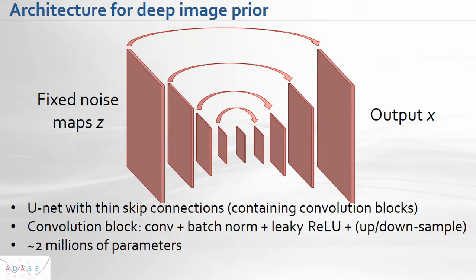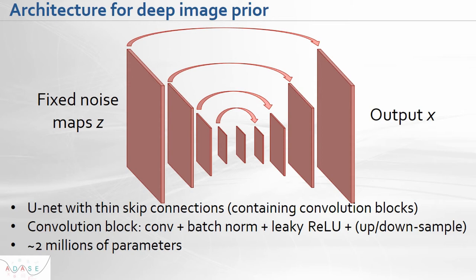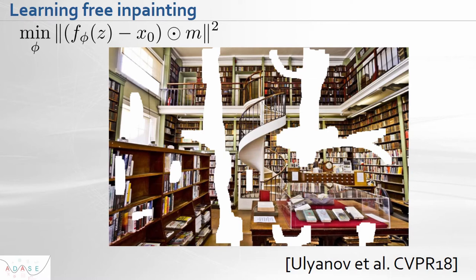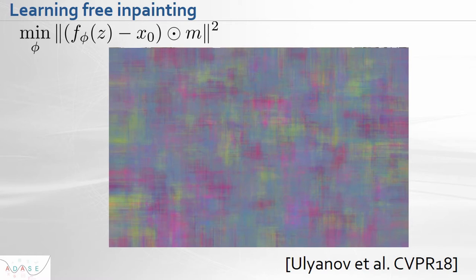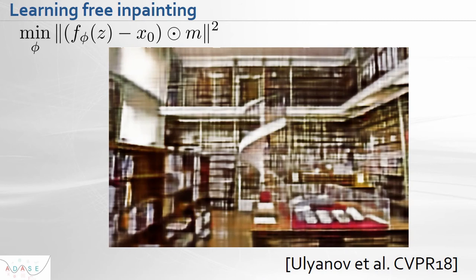The architecture of Deep Image Prior is very similar to a UNet with skip connections — a sequence of filters of decreasing size in the first half, and increasing size in the second half. We take an image with many missing pixels and start minimizing the distance with respect to filters of the neural network. On the first iterations of gradient descent results are very bad, but step by step quality improves and at the end we see accurate predictions.